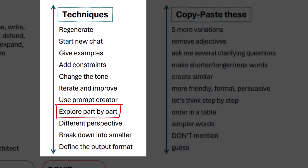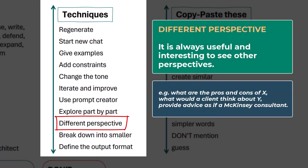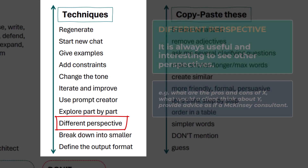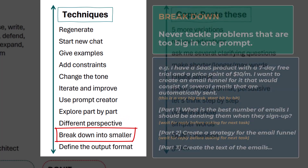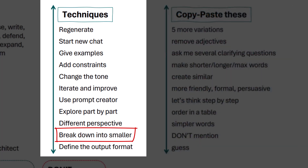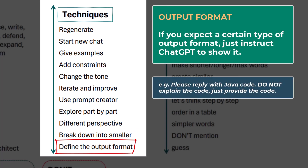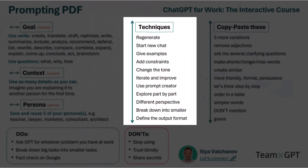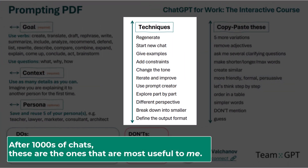Number nine: ask for a different perspective on a topic. It is always useful and interesting to see other perspectives. Number ten: break down into smaller bits — never tackle problems that are too big for a single prompt. And the final one: if you expect a certain type of format, just instruct ChatGPT and it will show it. There are many other techniques — after thousands of chats, these are the ones most useful to me.